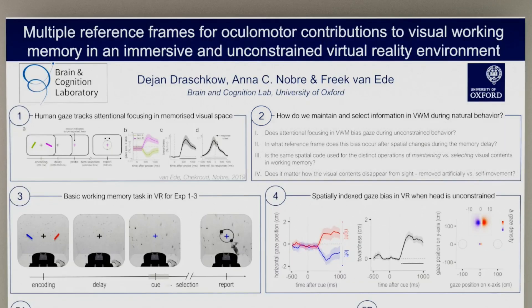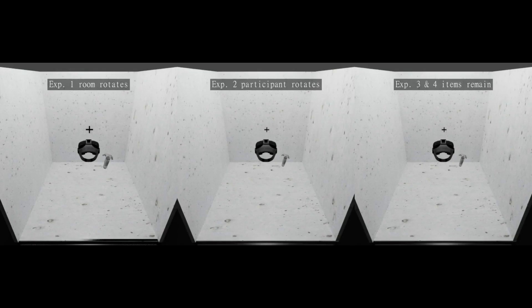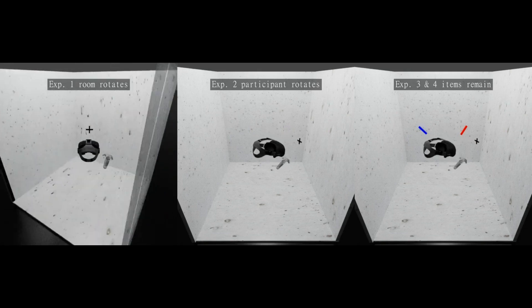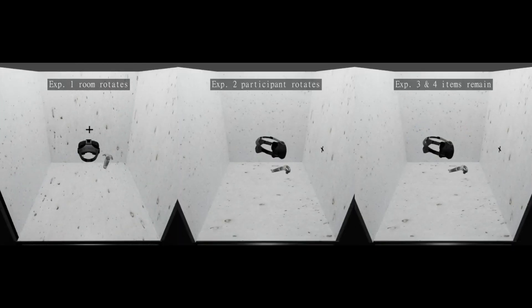So first I would like to give you a quick comparative overview of the experiments used in the study before focusing on each experiment individually. Here you see the experimental procedure of the three experiments next to each other. In experiment one, the participants remained static while the environment rotated around them during the memory delay. In the other experiments, the participants locomotored on their own by following the fixation cross from one wall to the other.